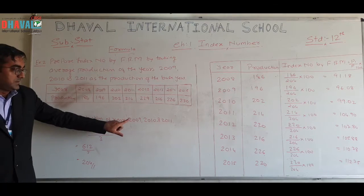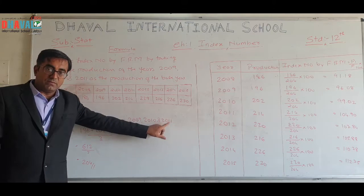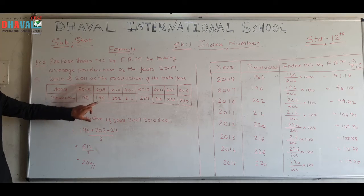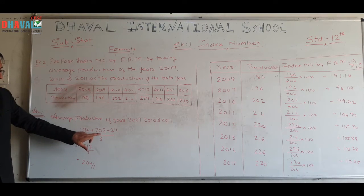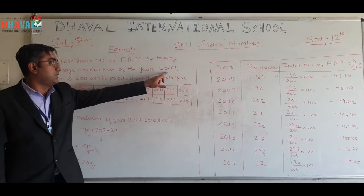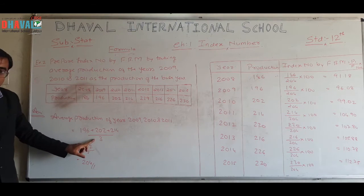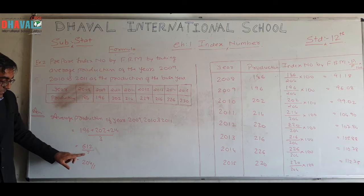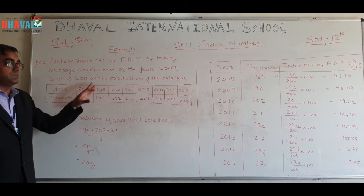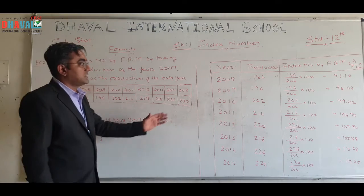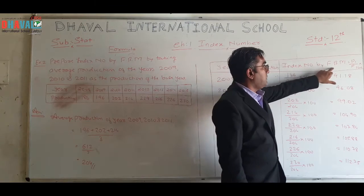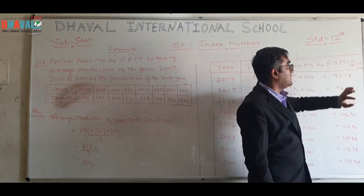Average production of years 2009, 2010, and 2011: price of 2009 is 196, price of 2010 is 202, and price of 2011 is 240. Divide by 3, because 3 years are given. Total is 612, divided by 3, gives answer 204. This is the average price of the base year. Now we take three columns for the answer: year, production, and index number by FBM using I = P1 / P0 × 100.